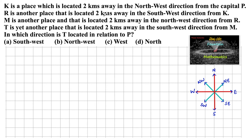K is a place located 2 km away in the northwest direction from the capital P. R is another place located 2 km away in the southwest direction from K. M is another place located 2 km away in the northwest direction from R. T is another place located 2 km away in the southwest direction from M. So in which direction is T located with respect to P?